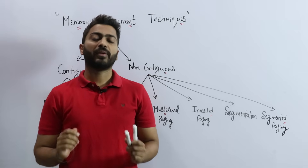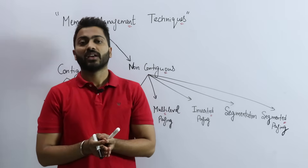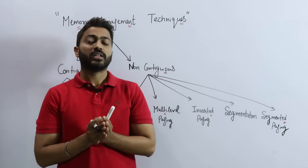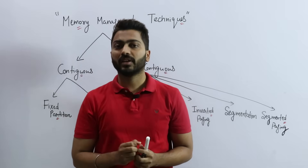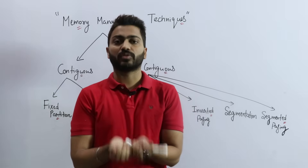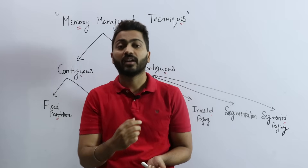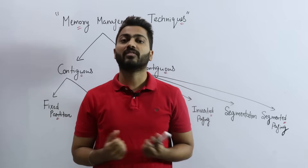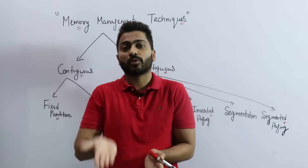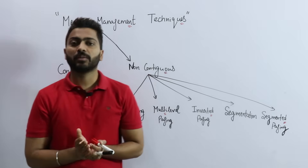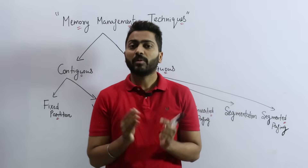Memory Management Techniques: the operating system uses various memory management methods to manage primary memory, that is RAM. As we know, the degree of multi-programming is very important. It says to keep more and more processes in the main memory so that whenever the CPU needs a process to execute, there will be plenty of processes available in RAM. Memory is a large area of bytes and every byte has some address.